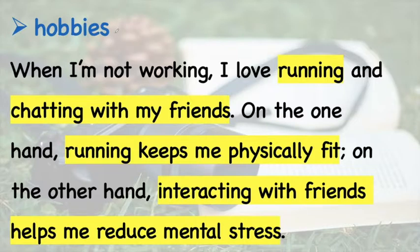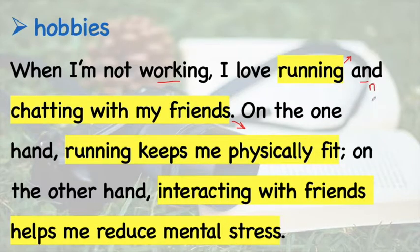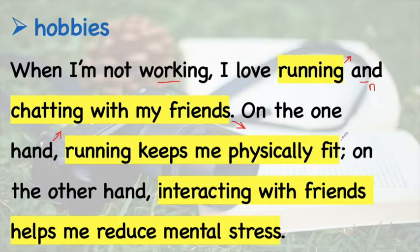For hobbies, instead of saying 'in my free time,' you can say 'when I'm not working' or 'when I'm not studying.' For example: 'When I'm not working, I love running and chatting with my friends.' On the one hand — notice the comma means your voice goes up, not down, because the sentence is not finished — 'running keeps me physically fit.'